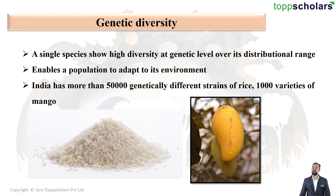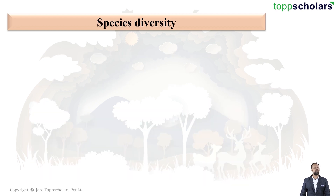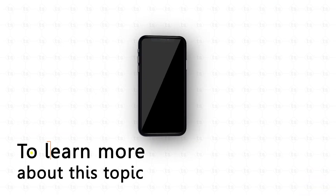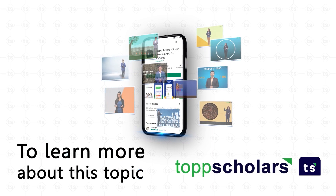Next we have species diversity. To put it simply, it is diversity at the species level — meaning the different species found in different regions. For example, the Western Ghats have more amphibian species diversity than the Eastern Ghats. The number of species of frogs and caecilians found in the Western Ghats is much more than in the Eastern Ghats. To learn more about this topic, download the Top Scholars app.